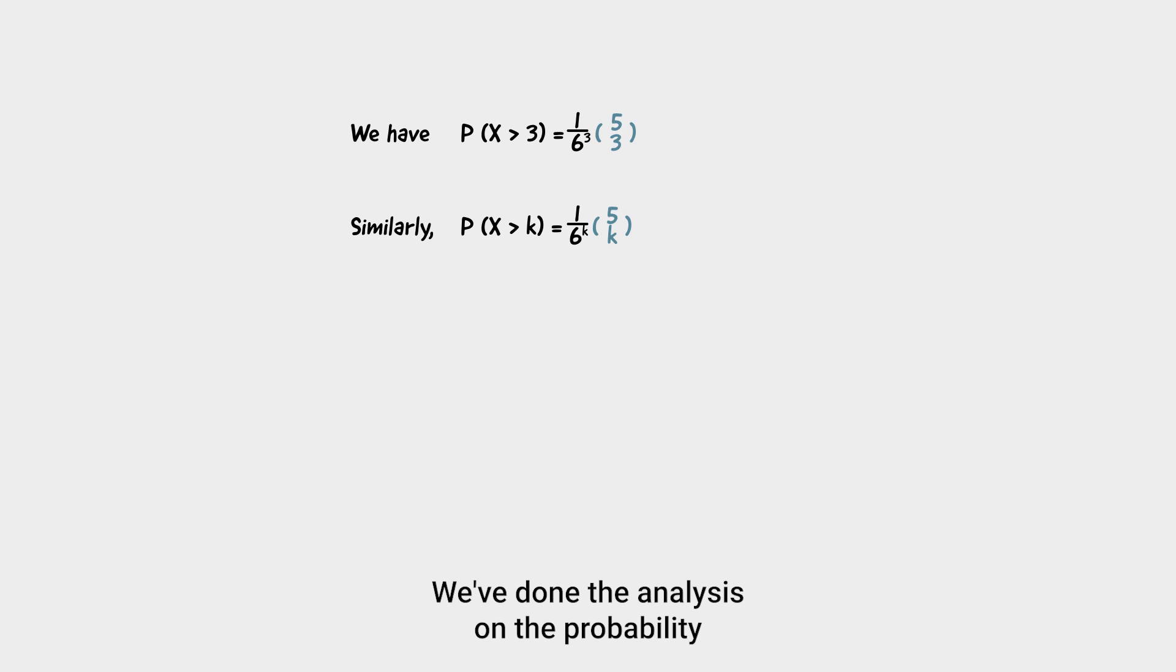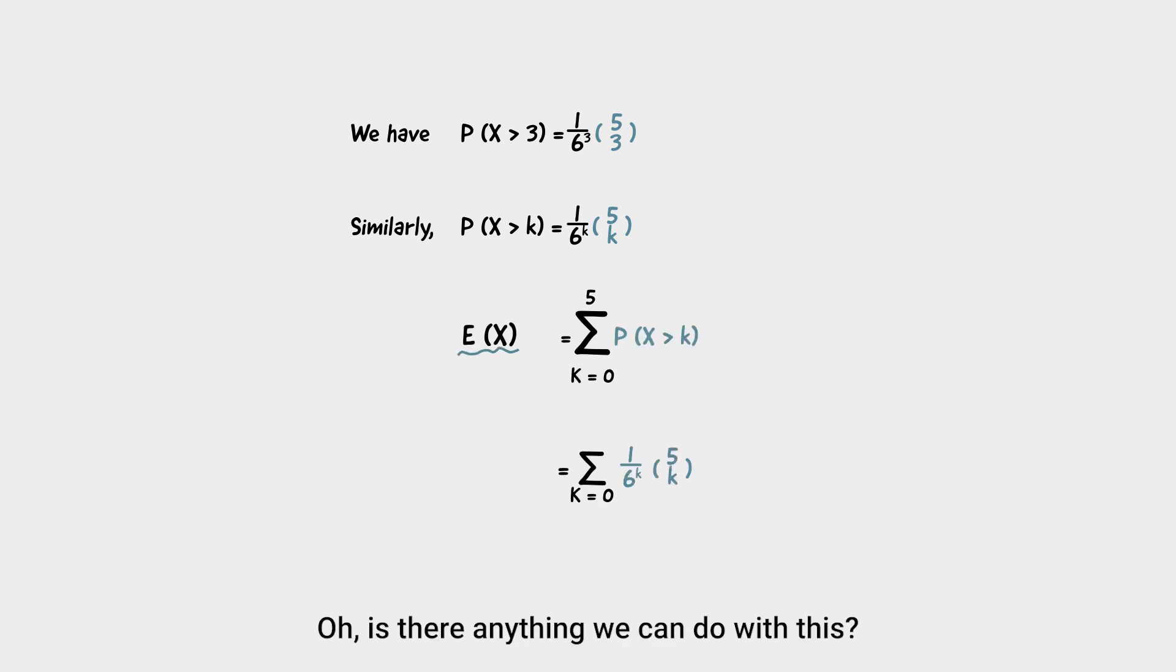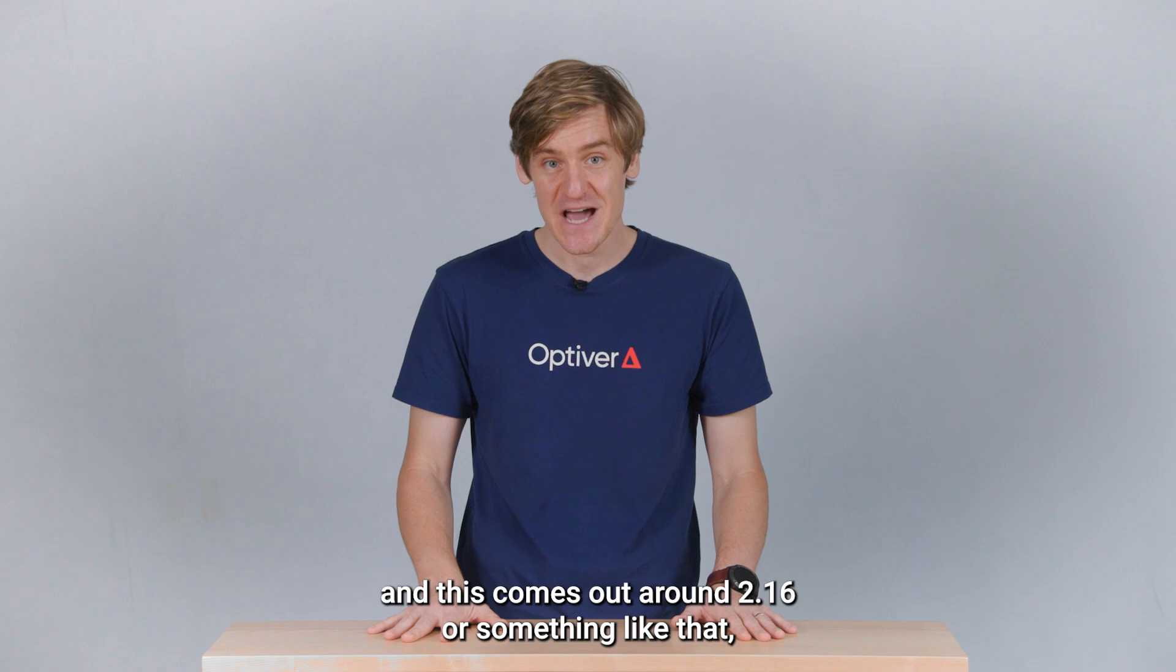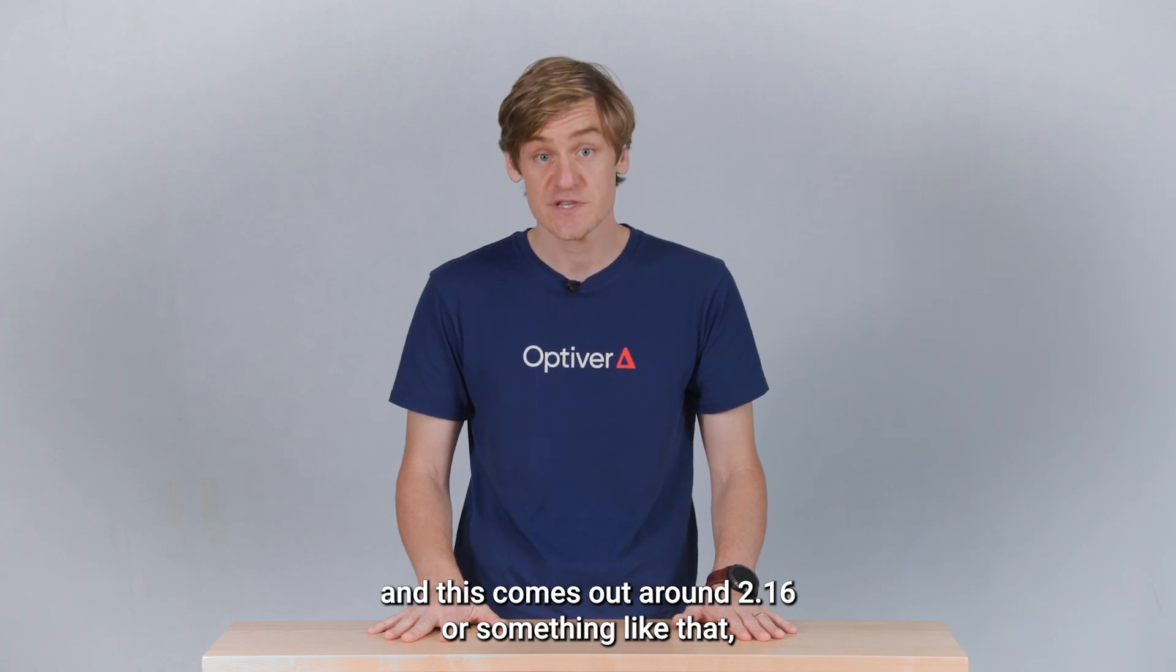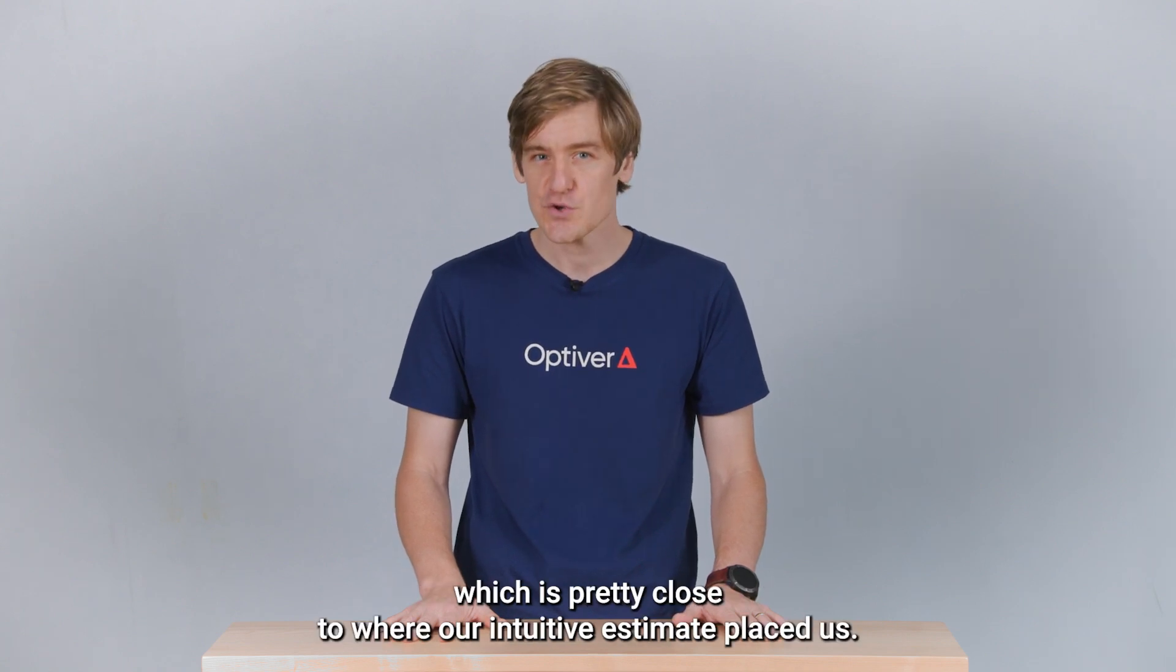We've done the analysis on the probability, and we now apply the direct substitution. Oh, is there anything we can do with this? Indeed there is, and I'll give you a two-word hint. Binomial Theorem. We can recognize that our expression is what you get if you expand one plus one-sixth all to the power of five. Thus we have the answer, and this comes out around 2.16 or something like that, which is pretty close to where our intuitive estimate placed us.